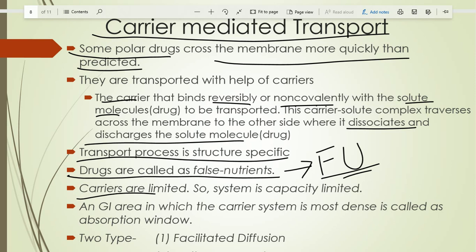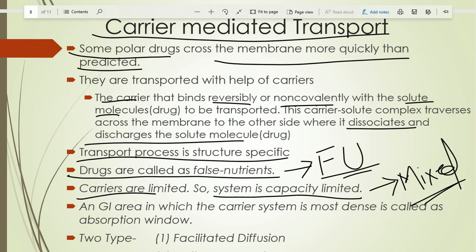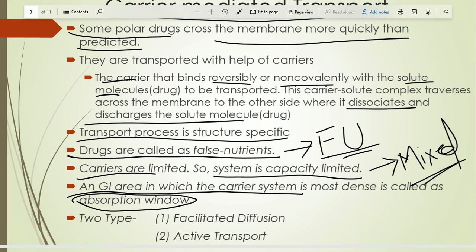Carriers are limited, so the system is capacity-limited — after a specific concentration the transportation process becomes constant. That is why carrier-mediated transport follows mixed-order kinetics. The GI area where the concentration of the carrier is highest is called the absorption window for that particular drug.